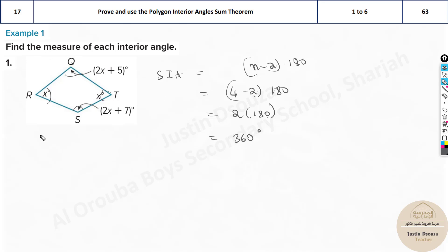This is the total interior angle. Now, what is this specifying? We know it's 2x plus 5, 2x plus 7, x - it's the sum of all these. So if I'm writing x plus 2x plus 5 plus x plus 2x plus 7, that equals 360 degrees.